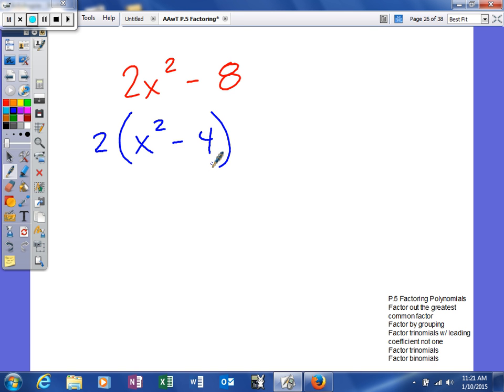When you notice there's a common factor of 2, you divide both the terms by 2, and you end up with x squared minus 4. Now, that may be the only factoring that we can do, but as I look at this, I recognize this is non-linear. So, I have to see if I can factor this.